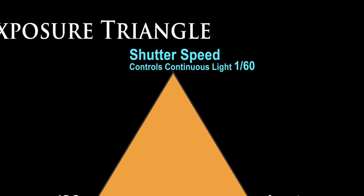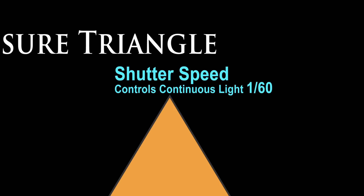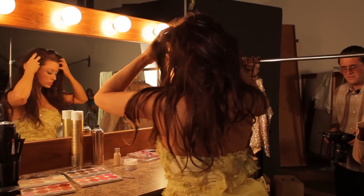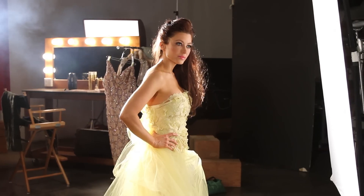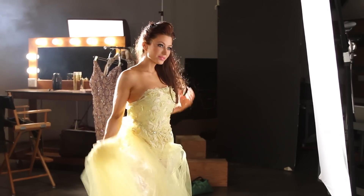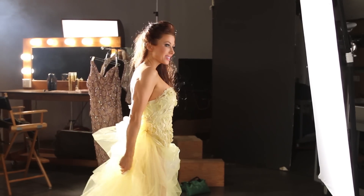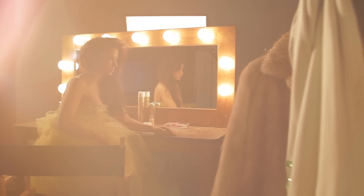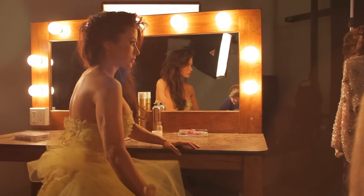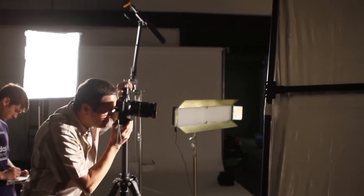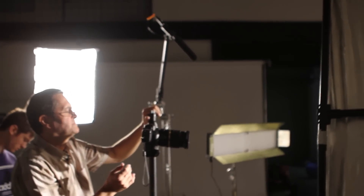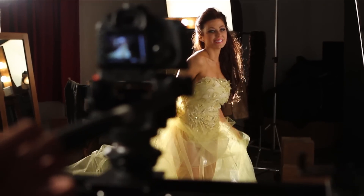When selecting the shutter speed, remember it does two things: it controls motion and it controls the continuous light source, but it has little or no effect on strobes. We must consider subject movement because continuous light does not freeze action like strobes do — it's a continuous source, not a quick flash. I don't want her to blur, so I went with 1/60th of a second. Shutter speed does not affect strobes until you get to 1/125th of a second or higher, depending on your strobes. At 1/60th of a second, the strobe will be fine.